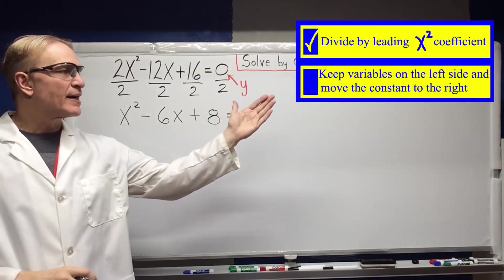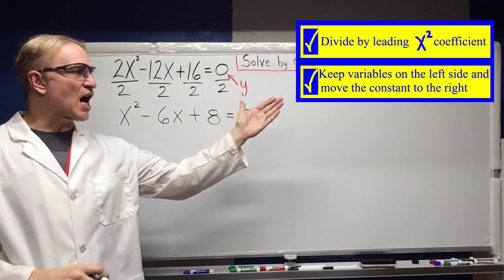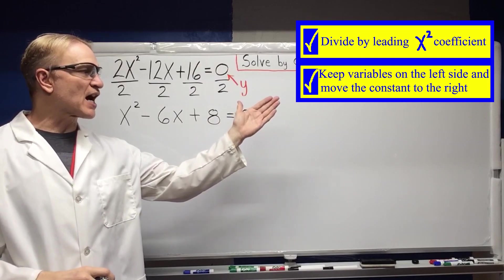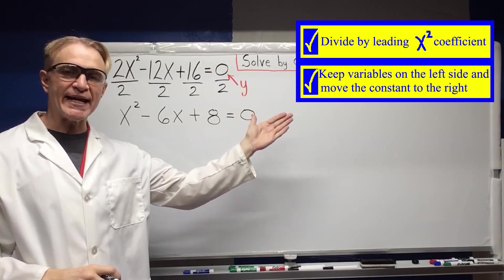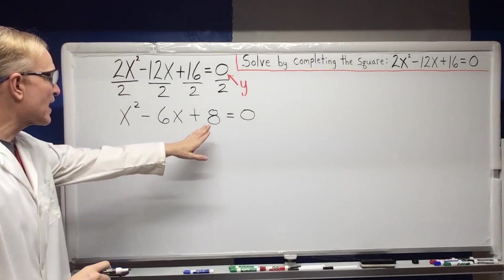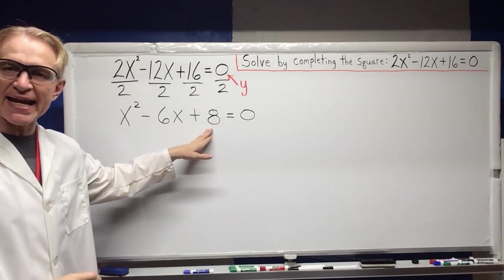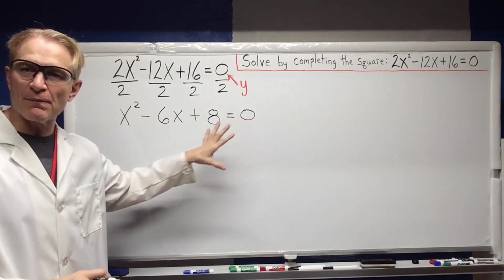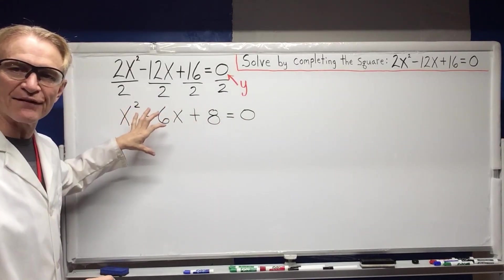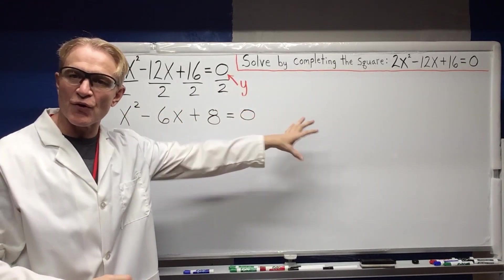The next step, keep variables on the left side and move the constant to the right. The only constant on this side is an 8. So if we subtract it from both sides, you'll have all the variables on the left and the constant on the right.